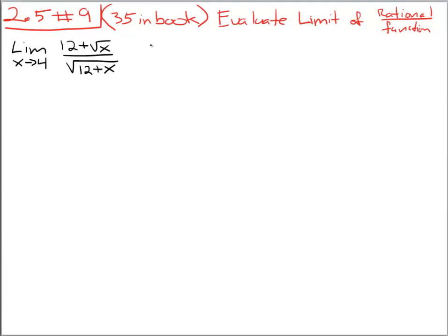If we plug in 4 we get 12 plus the square root of 4 all over the square root of 16, which goes to 14 on top, 12 plus 2, all over 4 on the bottom, and we just get 7 halves or 3.5.